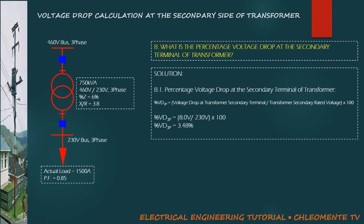Then, to determine the percentage voltage drop at the secondary terminal of transformer, simply the voltage drop of 8 volts divided by the rated voltage of 230 volts equals 3.48%.